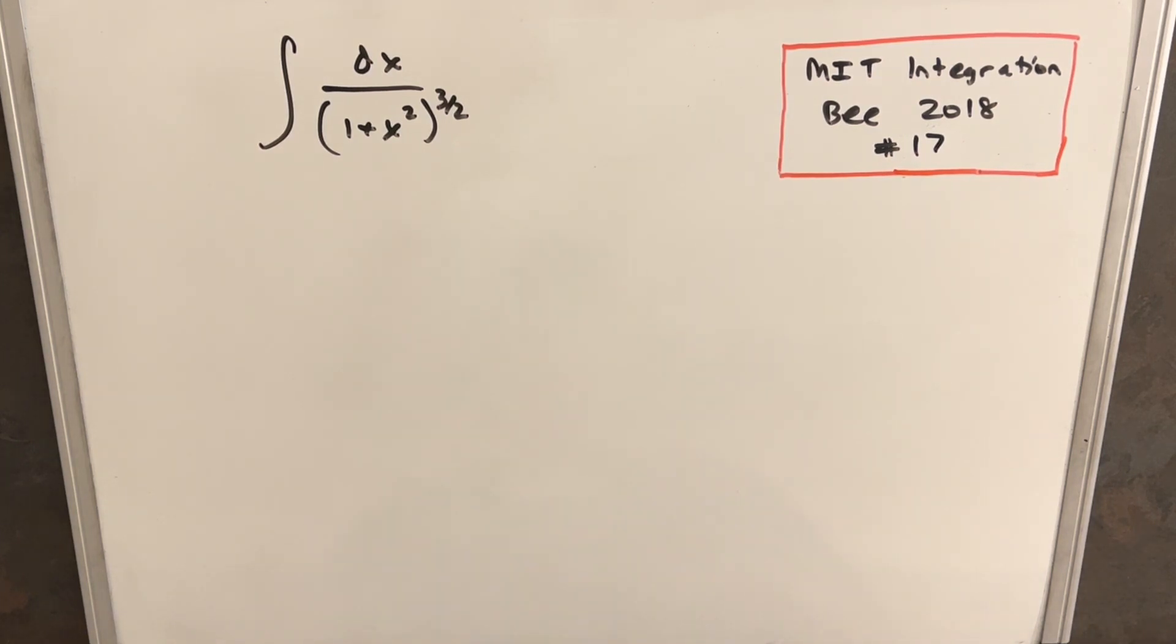We have MIT Integration Bee 2018, problem number 17. We have the integral of dx over one plus x squared to the three halves power.